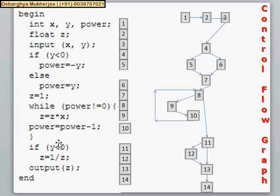we will simply give some tag number with each line. In this line we are declaring x, y and power as integer variables. We label it as 1. The second line is 2. Then input x, y is 3. Now this if statement is labeled as 4.